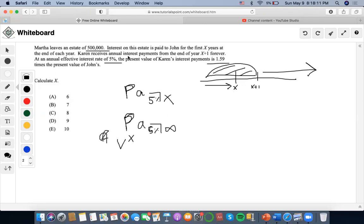So now it says that the present value of her payments are 1.59 times the present value of John. So that would mean that her present value V to the X could also be denoted by 1.05 to the negative X over 0.05 times 1 over 0.05.